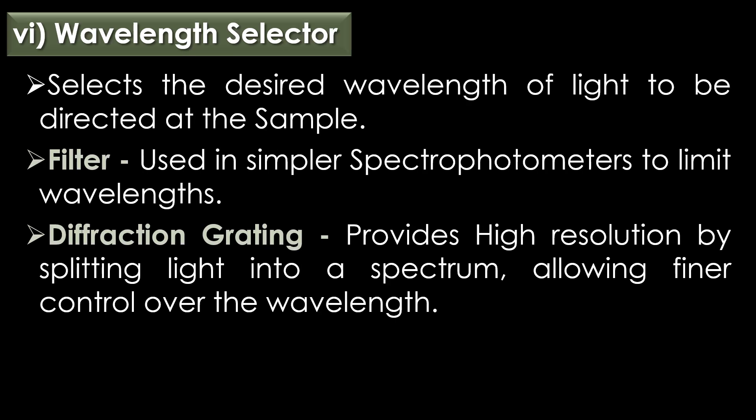Wavelength selector: the wavelength selector selects the desired wavelength of light to be directed at the sample. Filters are used in simpler spectrometers to limit wavelengths. The diffraction grating provides high resolution by splitting light into a spectrum and allowing finer control over the wavelength.